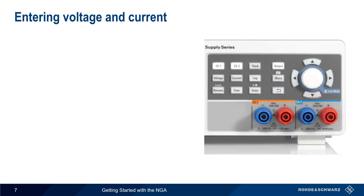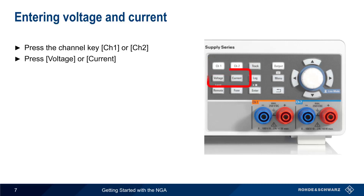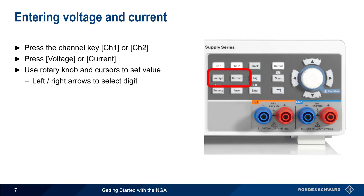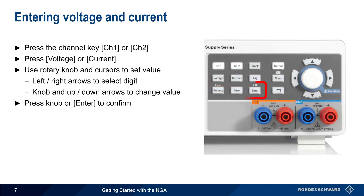Once connections are made, we enter values for voltage and/or current, and then enable output. For two-channel models, you'll need to select channel 1 or channel 2 using the hard keys, and then choose either voltage or current. Values are set using the rotary knob and cursor keys. Use the left and right arrows to select the digit, and either the knob or the up and down cursor keys to change the values. Confirm values by pressing the knob or the enter key.